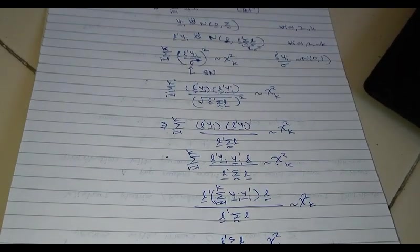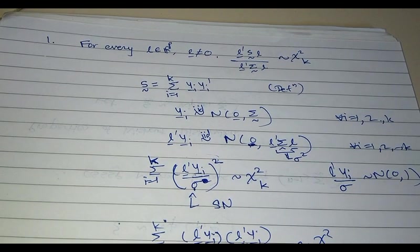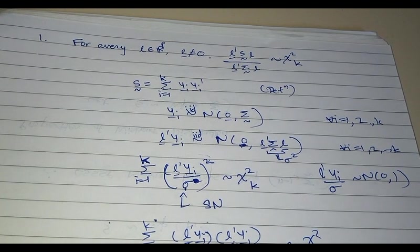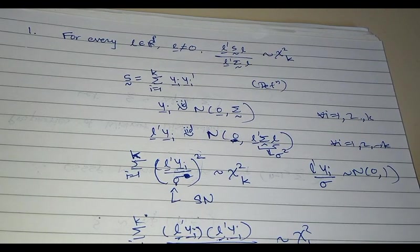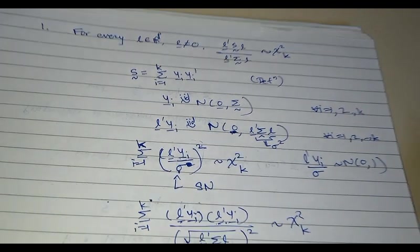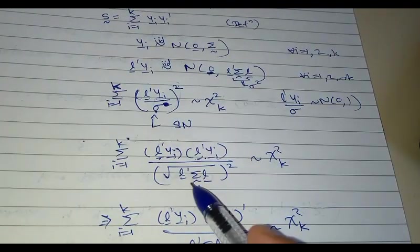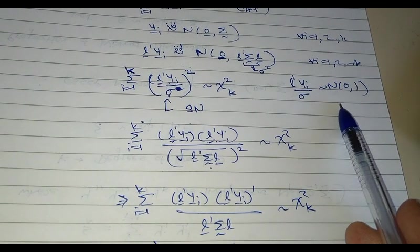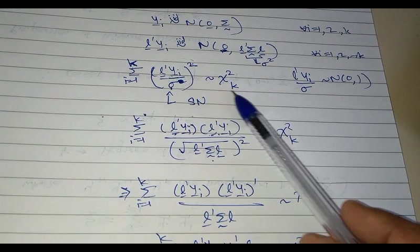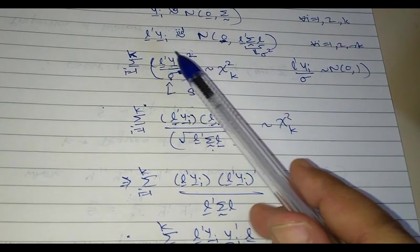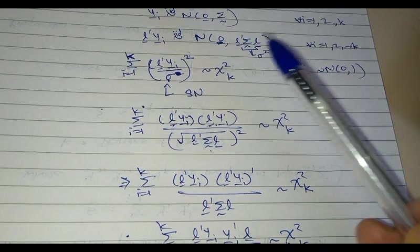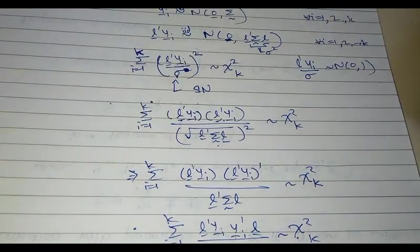We have proved the first property of Wishart distribution: if L is in ℝᵖ, then L'SL / L'ΣL is chi-square with k degrees of freedom. The proof relies on properties of univariate normal and chi-square — specifically that chi-square comes from sum of squares of standard normals.